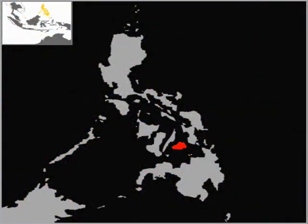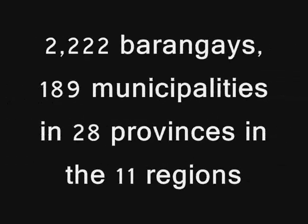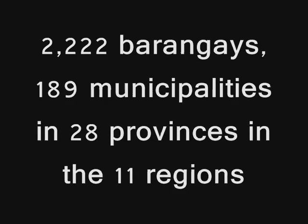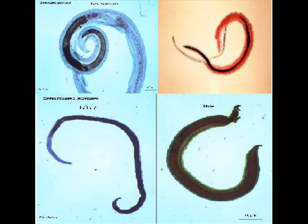Schistosomiasis is the second most prevalent tropical disease in the world. In the Philippines, currently there are 2,222 barangays, 189 municipalities, and 28 provinces in 11 regions endemic with Schistosoma japonica.